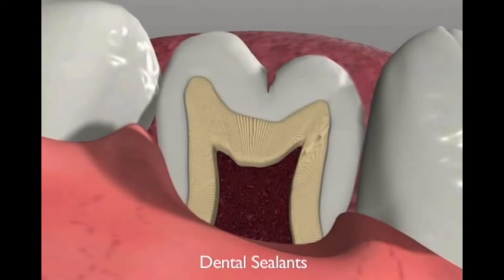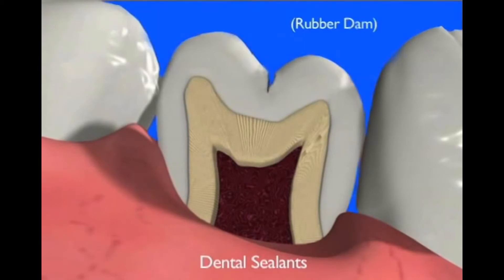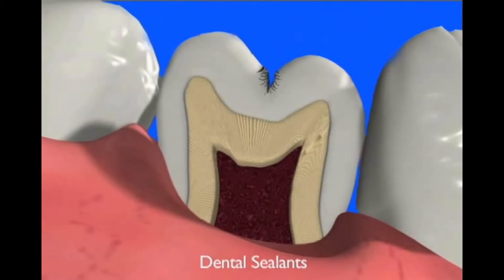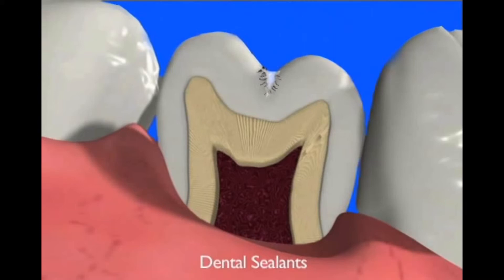Following thorough plaque removal from the pits and fissures, the tooth is isolated from all mouth moisture, and the grooves are etched with a mild acid solution. This produces a microscopically roughened surface into which the sealants will adhere. The sealant is then applied to the grooves as a viscous liquid, which hardens on its own or by exposure to a blue light. Once placed, the sealant prevents bulk plaque from being able to accumulate in the pits and fissures.